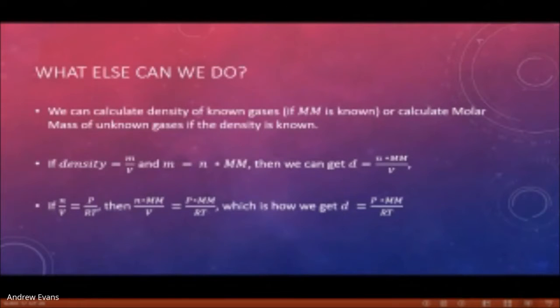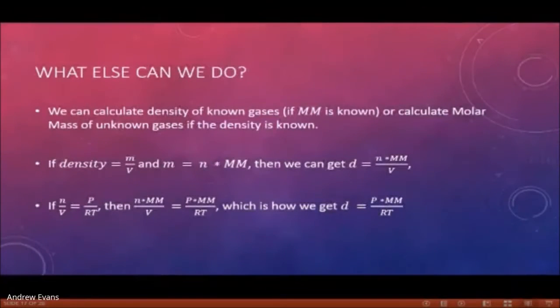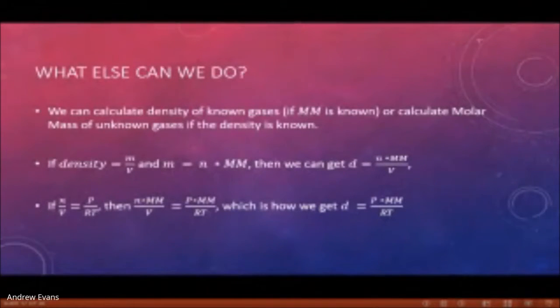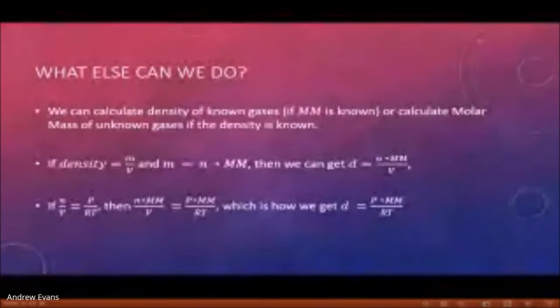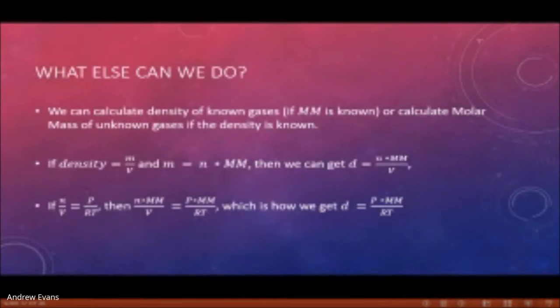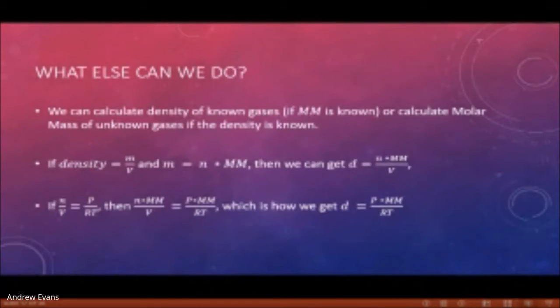One other thing we can do with the ideal gas equation is determine the molar mass or the density of a gas. This is the one time the identity of the gas actually matters in an ideal gas problem. Because pV = nRT, the n is just straight up moles, so unless you're given grams there's no way to differentiate one gas from the other. Density is mass over volume, and another way to look at mass is moles times molar mass, so rearranging the equation, density equals moles times molar mass over volume.